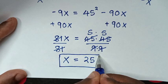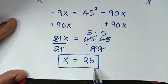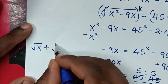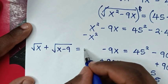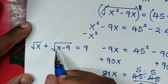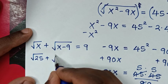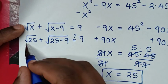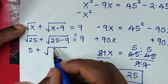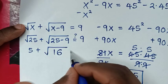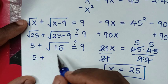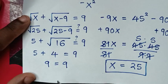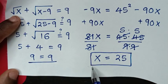Therefore the final answer is x equals 25. To verify, we substitute x = 25 back into the original equation: square root of 25 plus square root of 25 minus 9 equals 9. That gives 5 plus square root of 16, which is 5 plus 4, equals 9. Left side equals right side, so x equals 25 is confirmed correct.